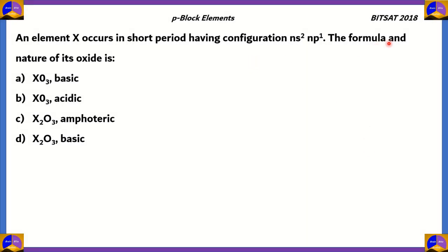Here's our first question. This one's asked in BitSat 2018. An element X occurs in a short period, having configuration ns2 np1. The formula and nature of its oxide is: XO3 basic, XO3 acidic, X2O3 amphoteric, or X2O3 basic. How do we solve this question? We need to find out the period and it's a good idea to start from the very first element of the periodic table and move on until we get something similar to ns2 np1.